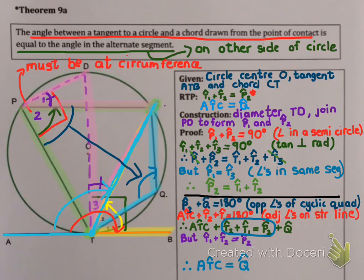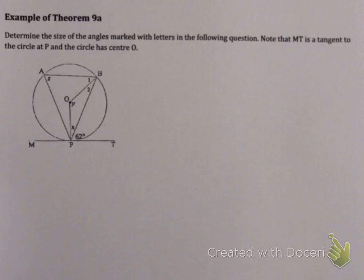Now this is a very, very common theorem to use. And when we use this theorem, our reason is going to be tan chord theorem. So it's quite a simple reason. It's not very descriptive. It's simply tan chord theorem. So let's have a look at what this looks like in an example.